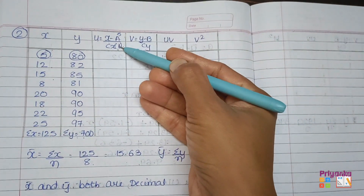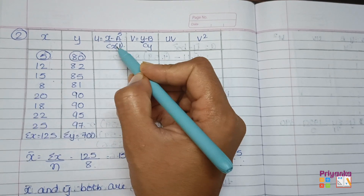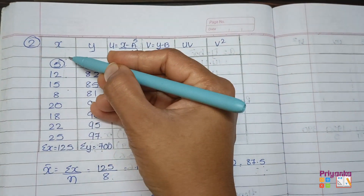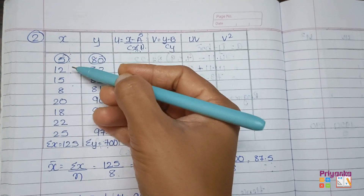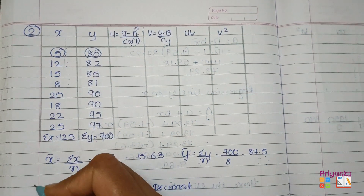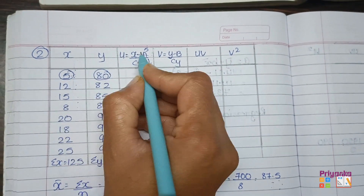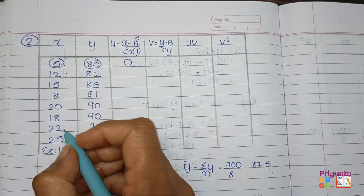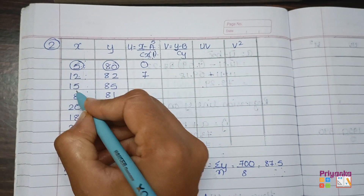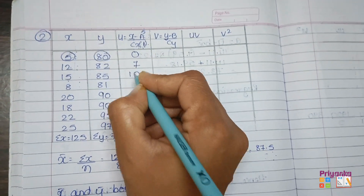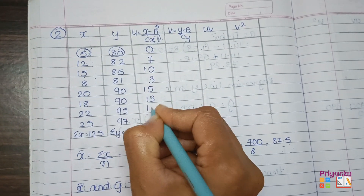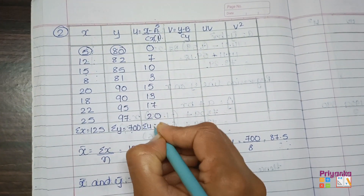To apply the UV formula, first find U = (x − assumed mean) / cx. We need to find cx — which number's table all values in the x column fall into. Looking at the values: 5, 12, 15, 8 — they don't fall into any one number's table, so we assume cx = 1. Calculations: (5−5)/1 = 0, (12−5)/1 = 7, (15−5)/1 = 10, and so on. Sigma U = 85.